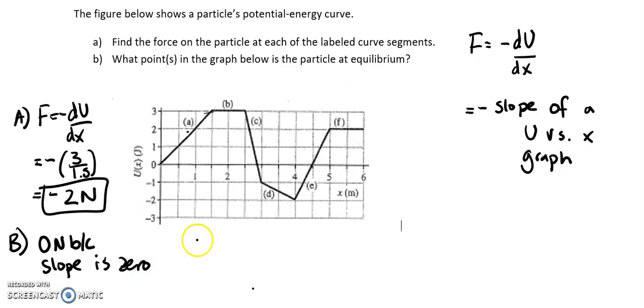We can keep going through this. For C, the derivative will be negative. I got negative 8 to be the slope of section C, but then we have to put a negative in front, so I got 8 newtons.